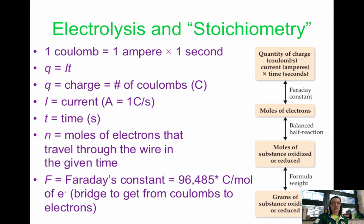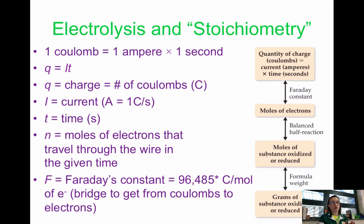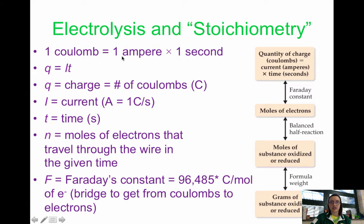With electrolysis and stoichiometry, we need to know different conversions and how charge is related to current and time. It's important to know that one coulomb equals one amp times one second. A way to remember this is 'Q = IT': Q is charge in coulombs, I is current (the abbreviation for current), and T is time. So one coulomb equals one amp times one second.